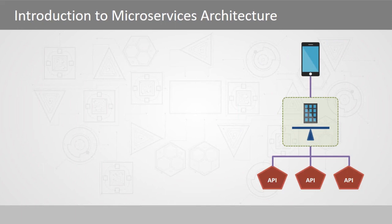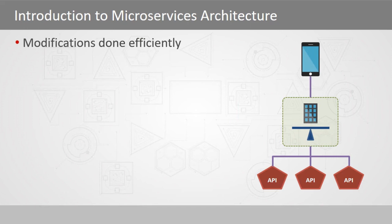Part of a microservices architecture is the ability to perform modifications. Our system has to change as time changes and as business situations change — government rules, new customers, new parts of the business. Modifications are part of the life of a software developer. With a microservices architecture, these modifications are done more efficiently in that the entire system does not have to be shut down. These modifications can be done on the fly, while the system continues running.